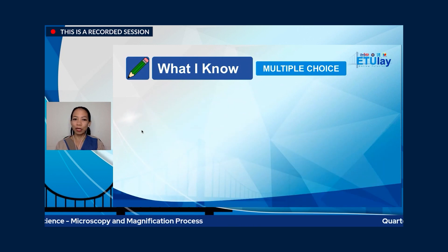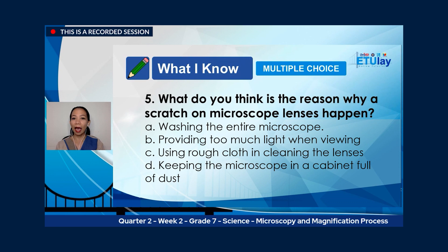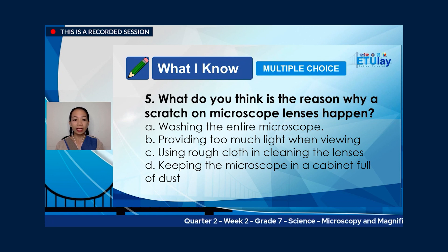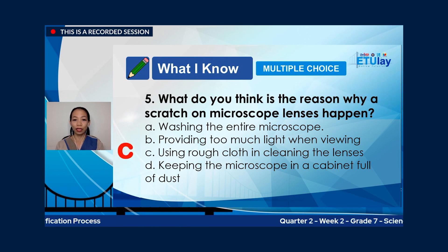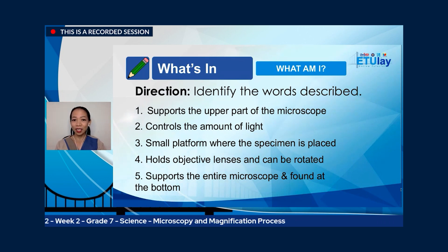Number five: what is the reason why scratches on microscope lenses happen? A. Washing the entire microscope. B. Providing too much light when viewing. C. Using rough cloth in cleaning the lenses. Or D. Keeping the microscope in a cabinet full of dust. The correct answer is letter C, using rough cloth in cleaning the lenses. Do not worry if you did not get all items correctly — we all make mistakes. Let us continue learning.